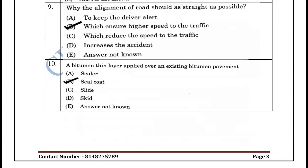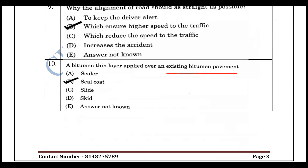A thin layer of pavement applied over the existing pavement is called a pavement overlay. This is also known as the shield coat. If we have an existing pavement, the overlay acts as a surface treatment — that is the shield coat.